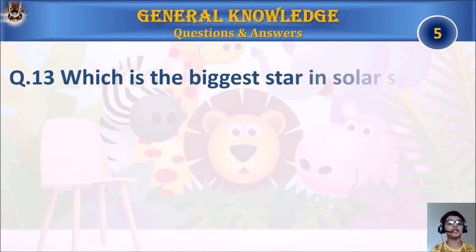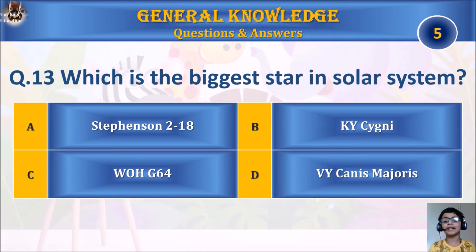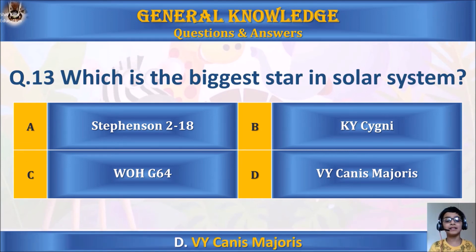Question 13: Which is the biggest star in the solar system? A. Stevenson 2-18, B. KY, C. WOH G64, or D. VY Canis Majoris. Your time starts. The answer is D. VY Canis Majoris.